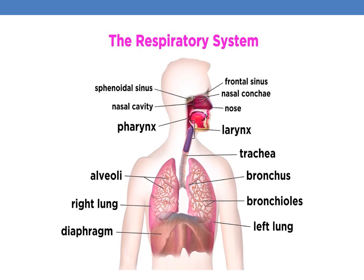Here is the overall pictorial representation of the respiratory system. This is the nasal cavity, this is the nose, and these are the nasal conchae. This is the larynx and this is the trachea. This is the right lung and this is the left lung, and these are bronchioles and this is the alveoli.